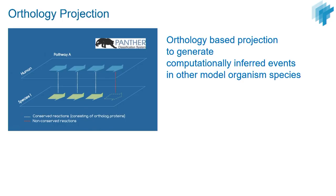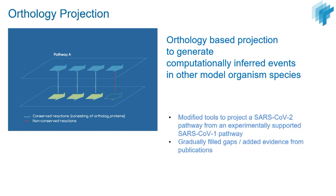One strategy we used within Reactome was to adopt a method we already had: orthology-based projections from human to a range of model organisms. We adjusted this approach to project from SARS-CoV-1 to SARS-CoV-2 as a quick fix to have a skeleton pathway, and then we filled in the gaps as additional hard data appeared in the literature.